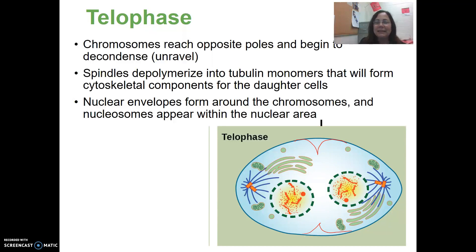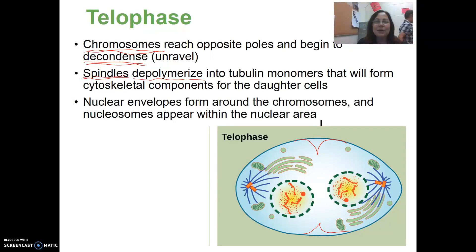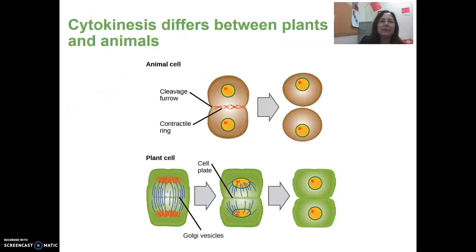In telophase, you will start to see the reverse of all the things that happened in prophase. The chromosomes will begin to decondense and form back into chromatin. The spindle fibers will depolymerize — they will break down into smaller fibers that aren't as noticeable under the microscope. Then nuclear envelopes will reform around the chromosomes.